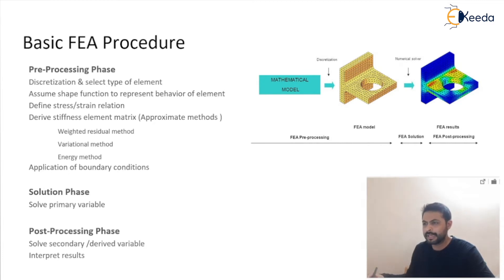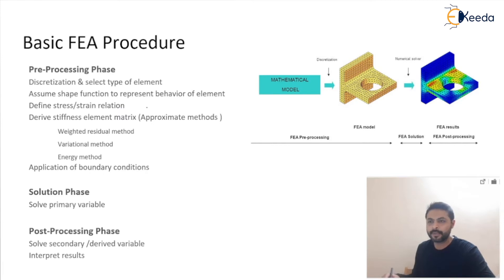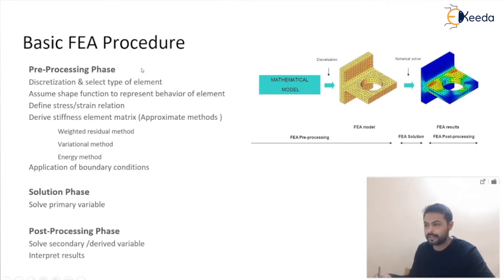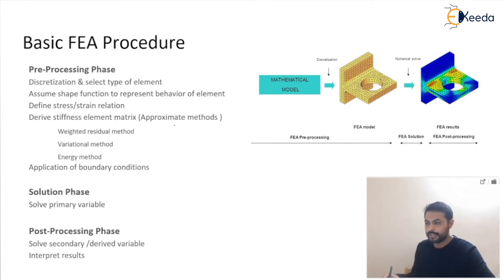After discretization, we apply various conditions — for example, we assume a shape function to represent the behavior of the element, and then we define the relation between physical phenomena, such as the stress-strain relation in solid mechanics problems. After that, we derive a stiffness matrix. Since an exact solution cannot be found over the entire domain, we assume an approximate solution at certain points. That method is known as the approximate method, which has different approaches: the weighted residual approach, the variational approach, and the energy approach.